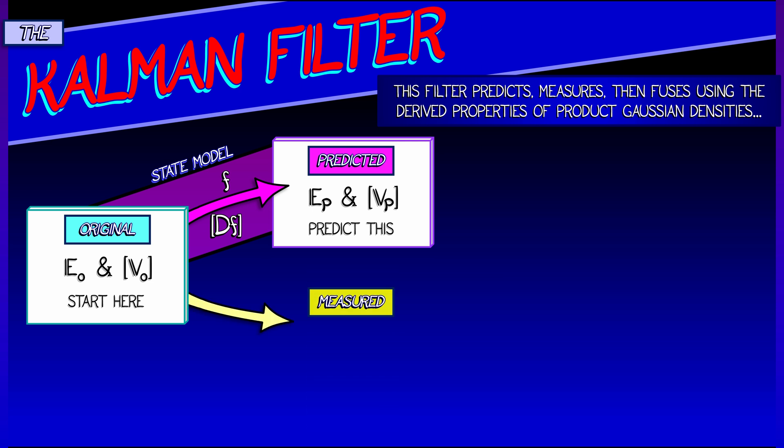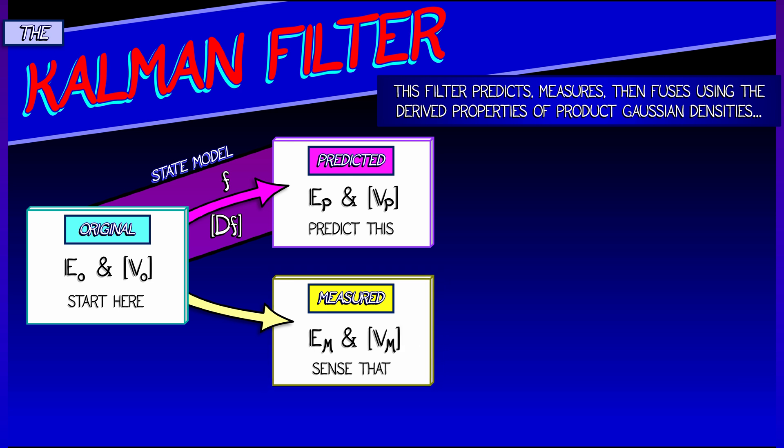But that's not all, because after the prediction, we then measure what we really got. That gives us an expectation, E m, and a covariance, V m.